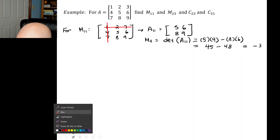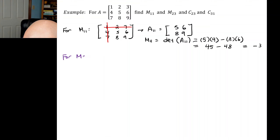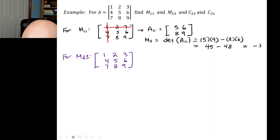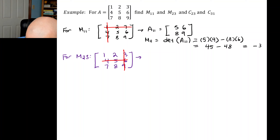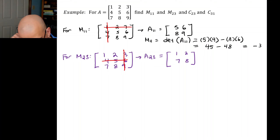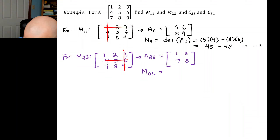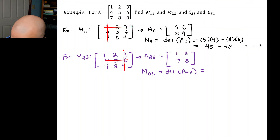For M23: delete row 2 and column 3. A23 equals the 2x2 matrix with entries 1, 2, 7, 8. Then M23 equals the determinant of A23: 1 times 8 minus 2 times 7, so 8 minus 14, equals negative 6.